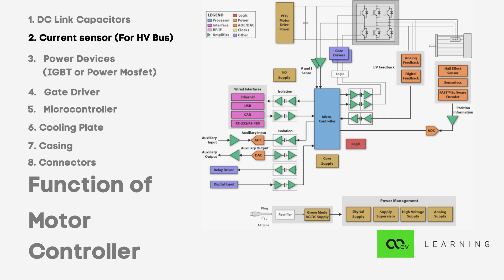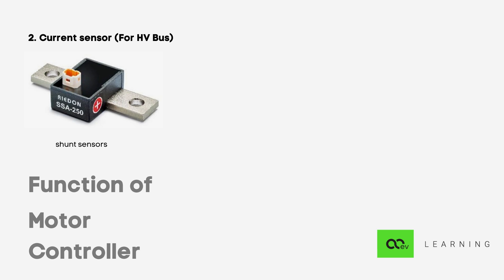Current sensors, as the name suggests, are transducers which measure current. Current sensors can be of contact type like shunt sensors where you basically measure the voltage over a known resistance and thus calculate the current.